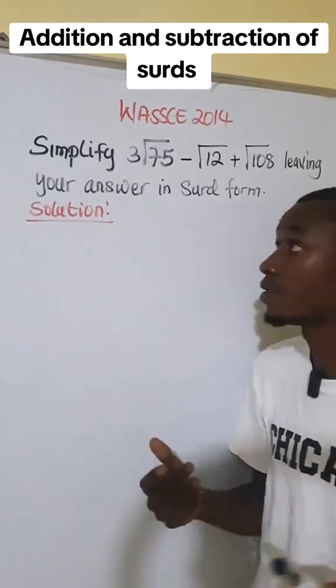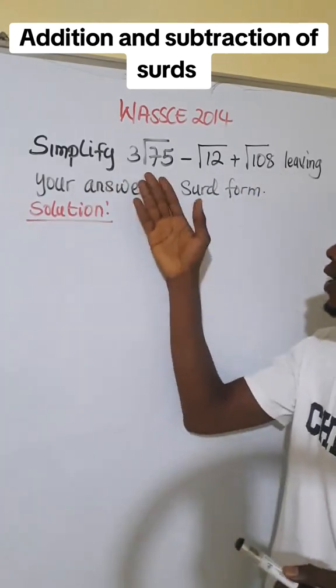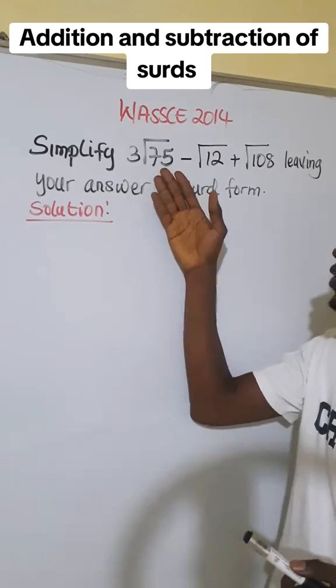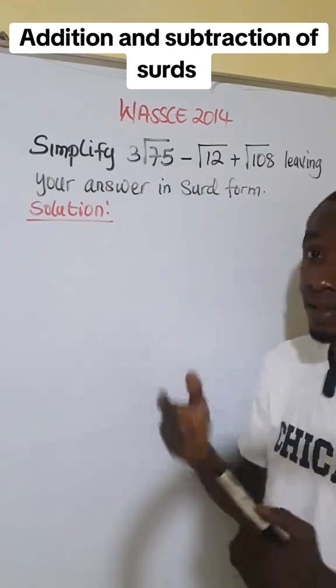This is an extract question from WASSCE 2014, coming from surds. We are asked to simplify 3√75 - √12 + √108, leaving our answer in surd form.